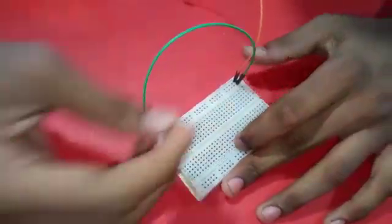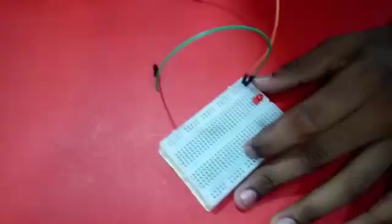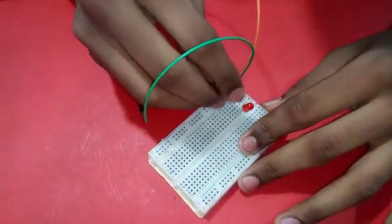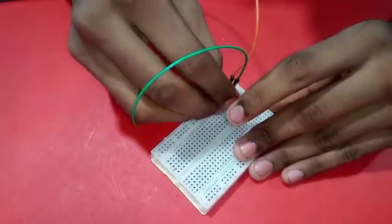And take one LED and put anywhere like this and connect resistor like this. LED positive to breadboard positive.